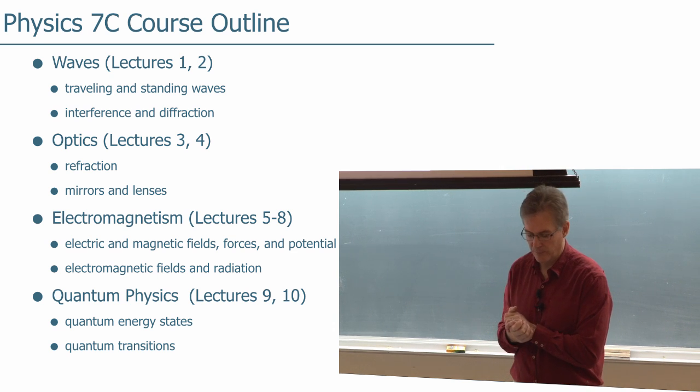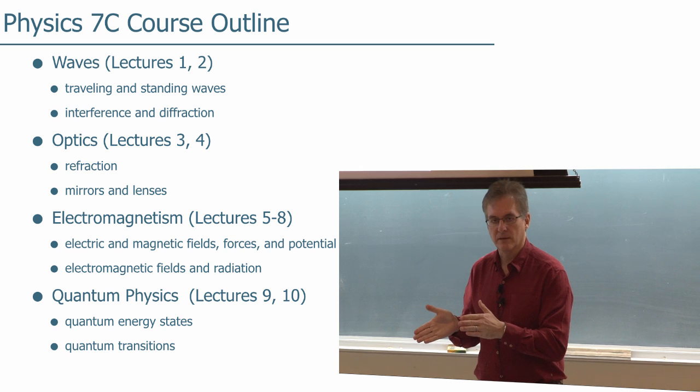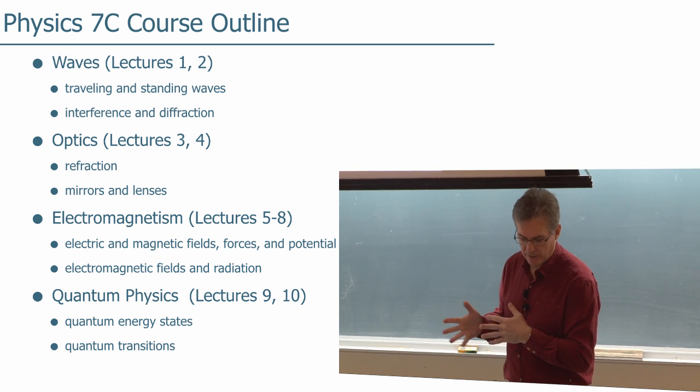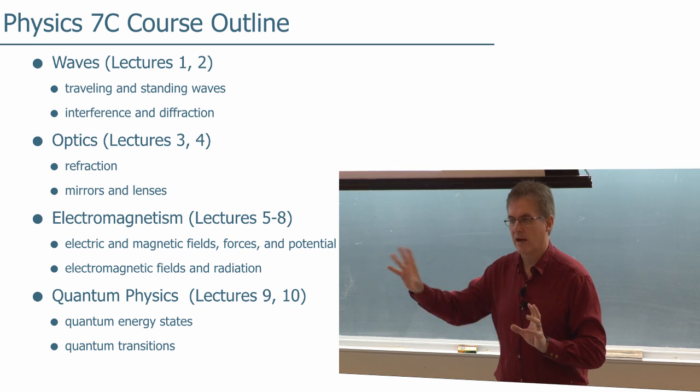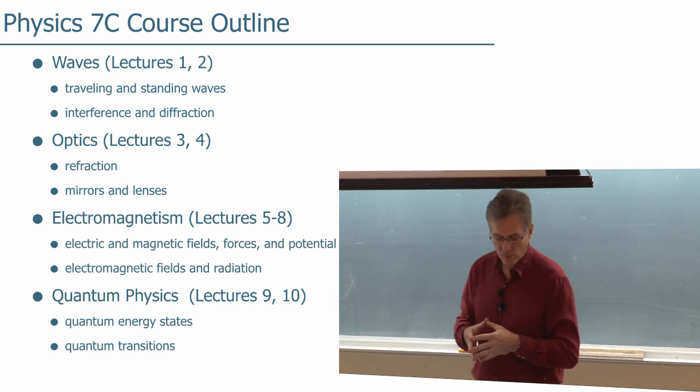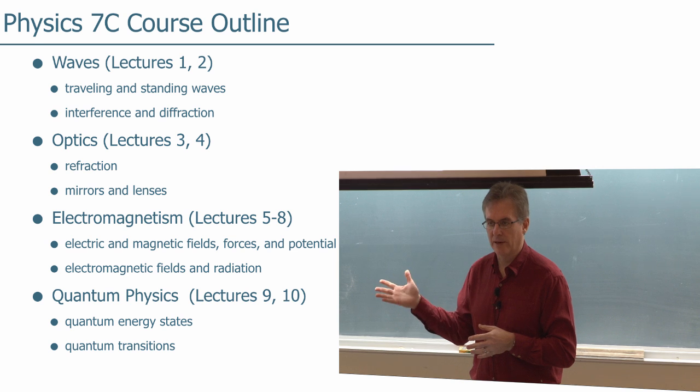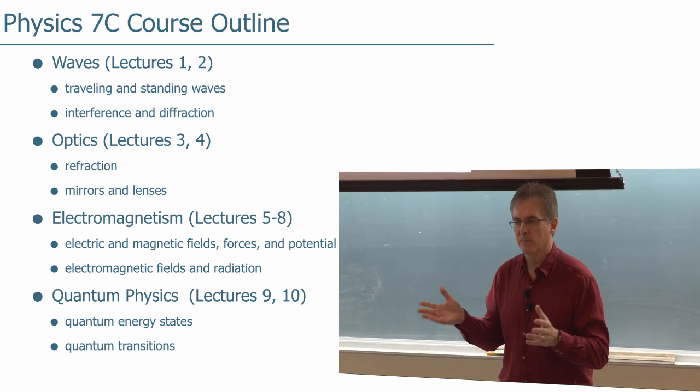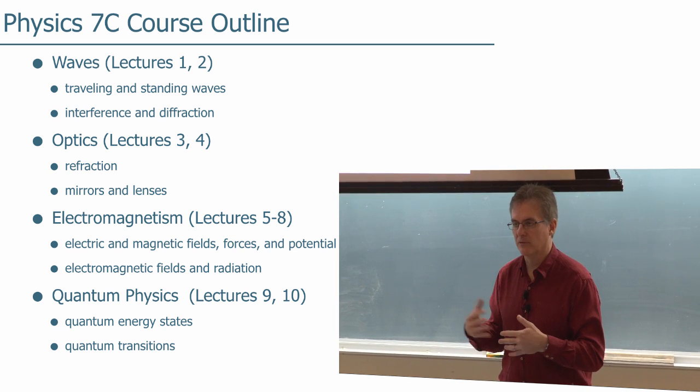interference and diffraction. We'll move into optics: refraction, reflection, mirrors and lenses, how to make images with lenses. Then we'll go into electromagnetism, including electric and magnetic fields, how you make them, how they look, how they're alike, and how they're different.